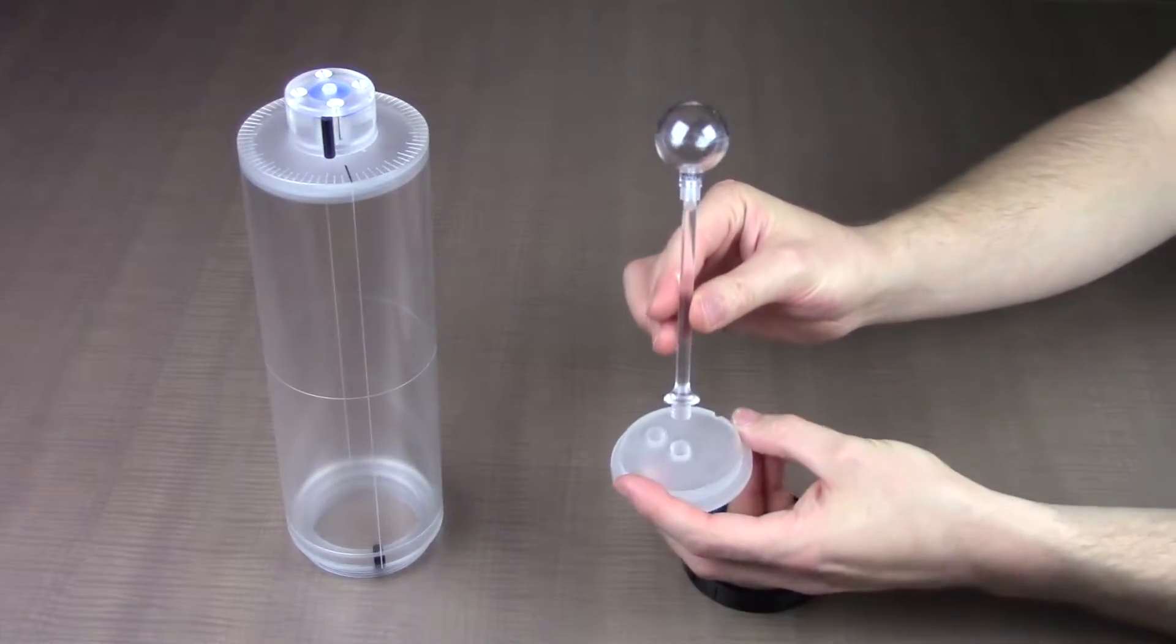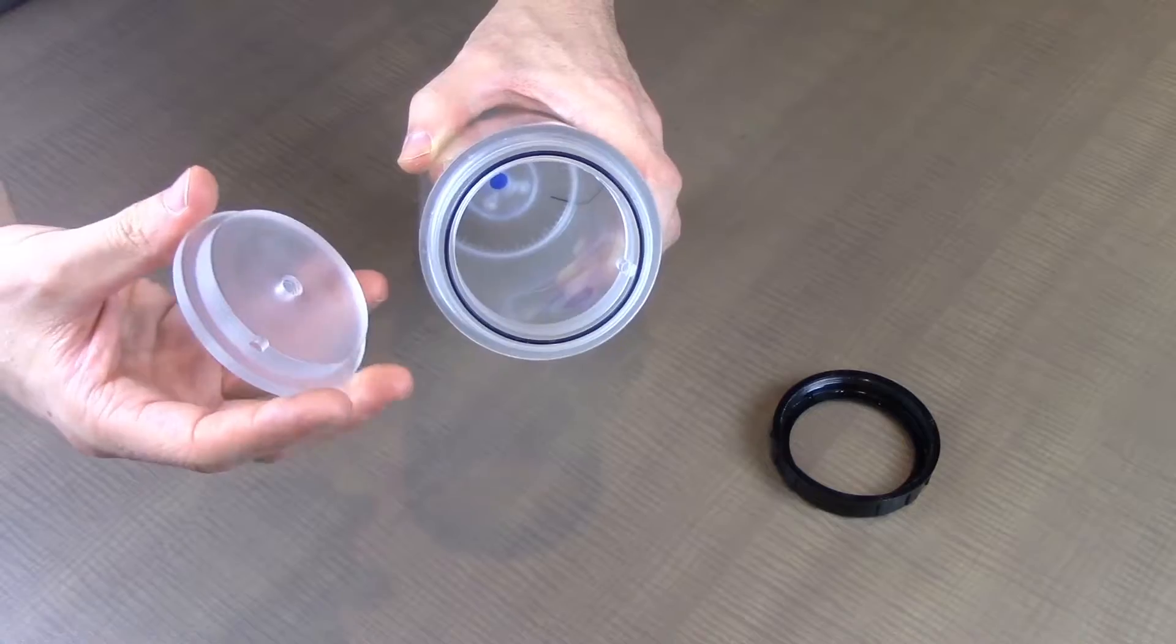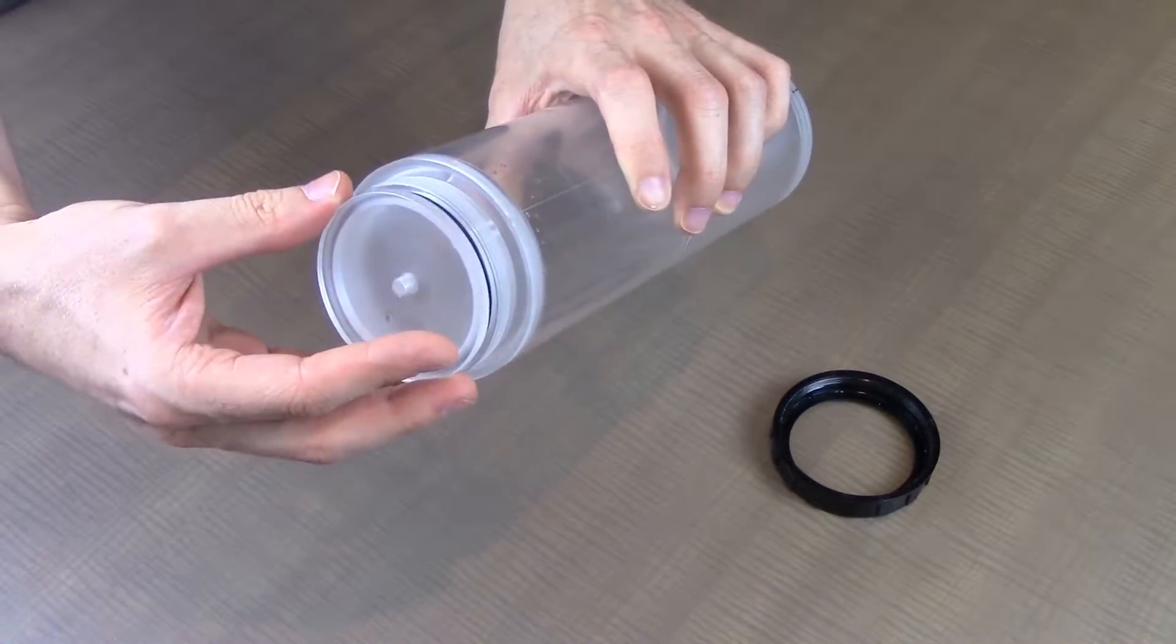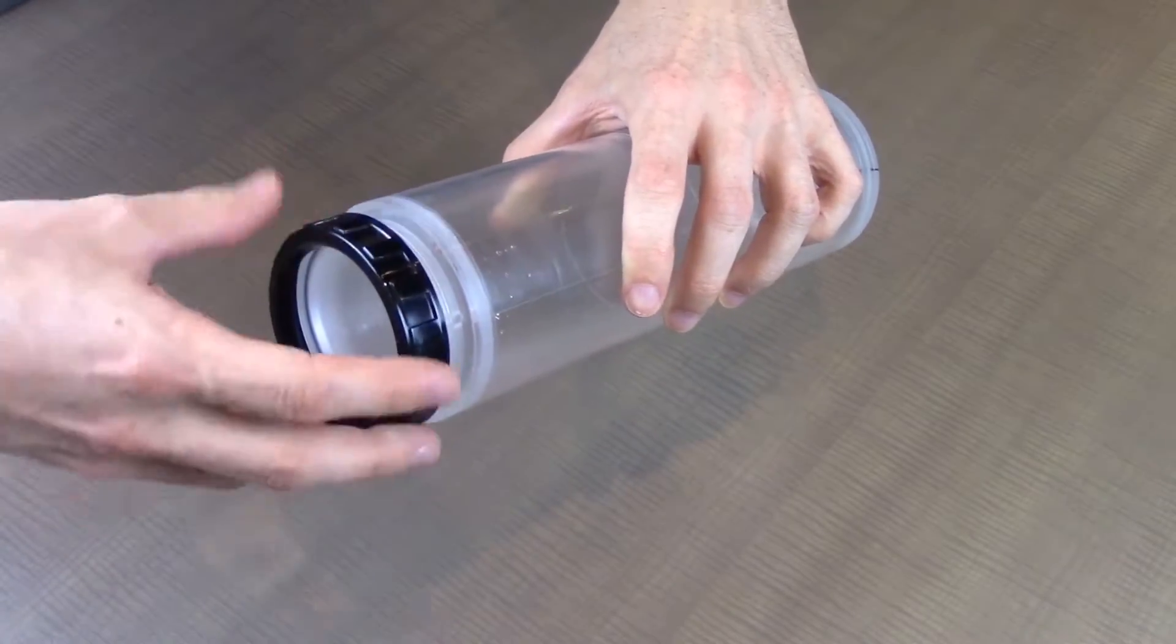The dual position lid allows for targets to be mounted at center or offset positions. After selecting your required configuration, align the detents on the lid and insert body and tighten the black locking ring collar to secure the assembly.